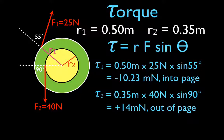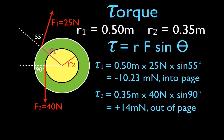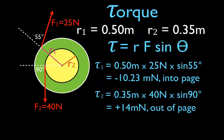It's worth noting that when we multiply the force times the sine of the angle, we get the component of the force that is perpendicular to the lever arm. It is only this perpendicular component that produces torque, which is why we use F times sine of theta in the equation.